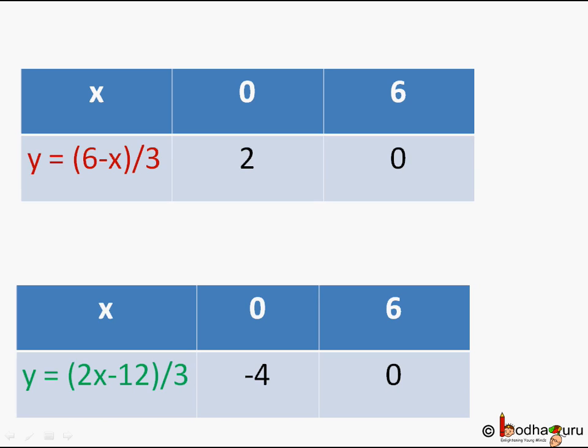So 6 comma 0 is the common coordinate between the two equations, means it is a solution of the pair of linear equations.